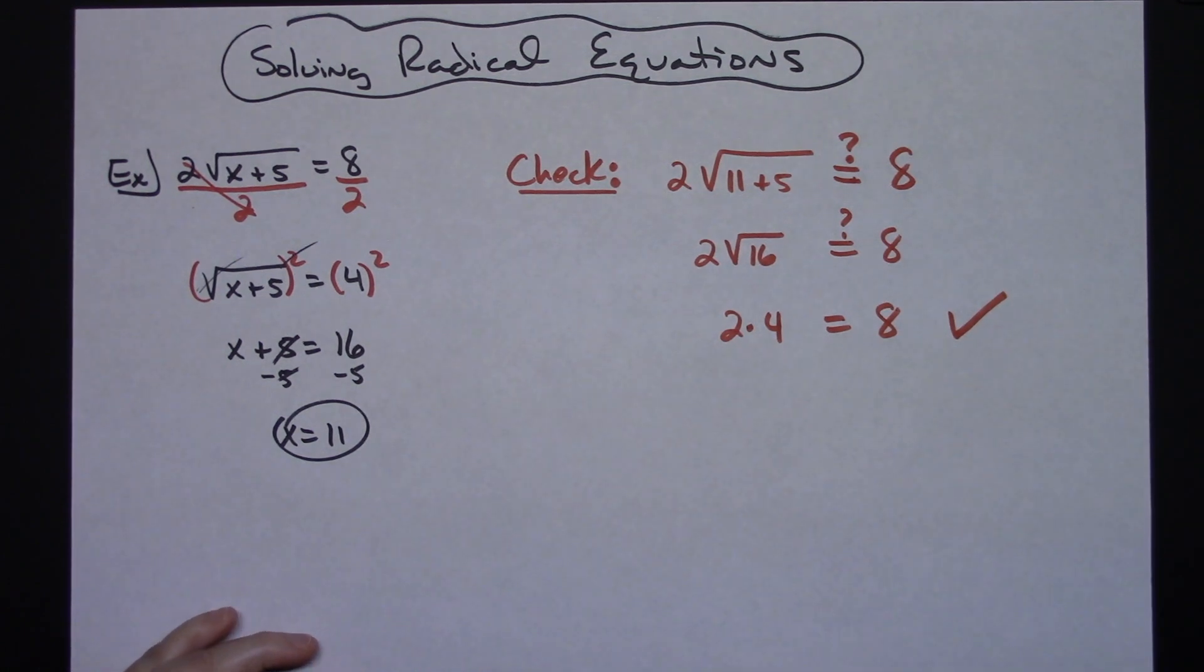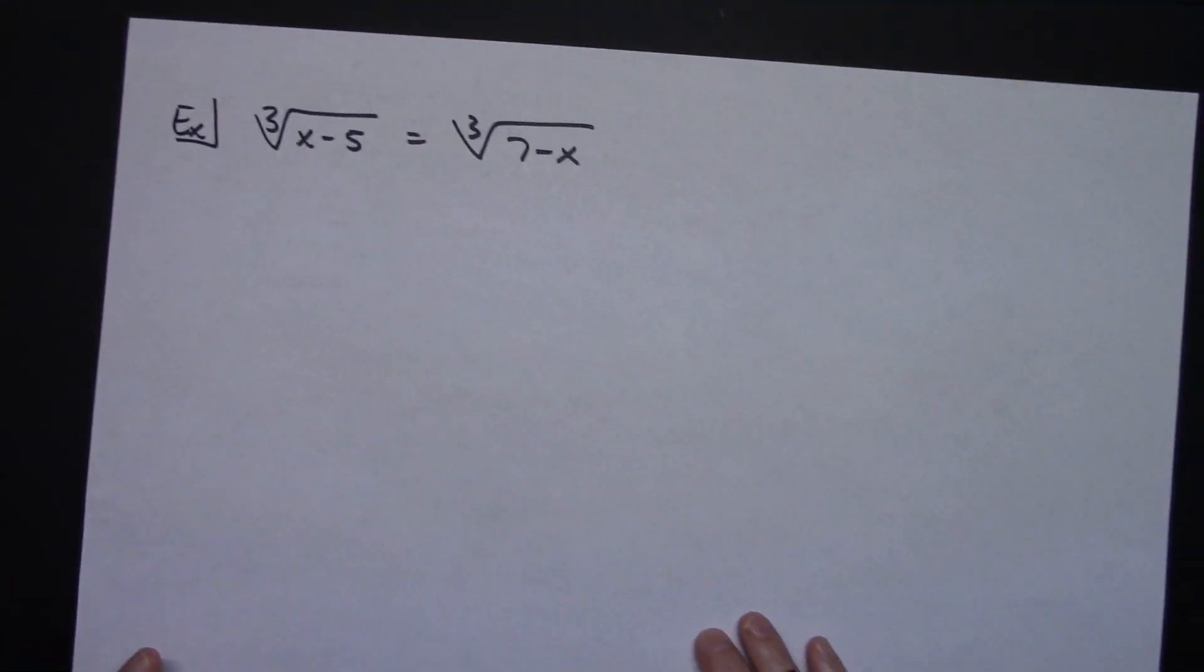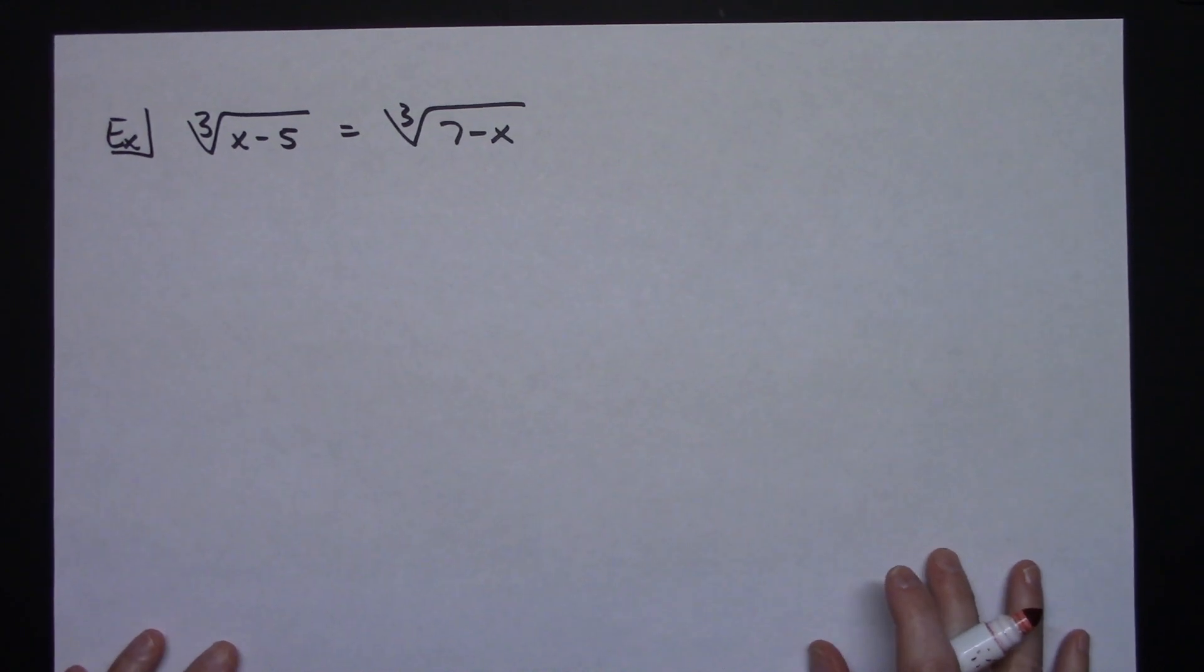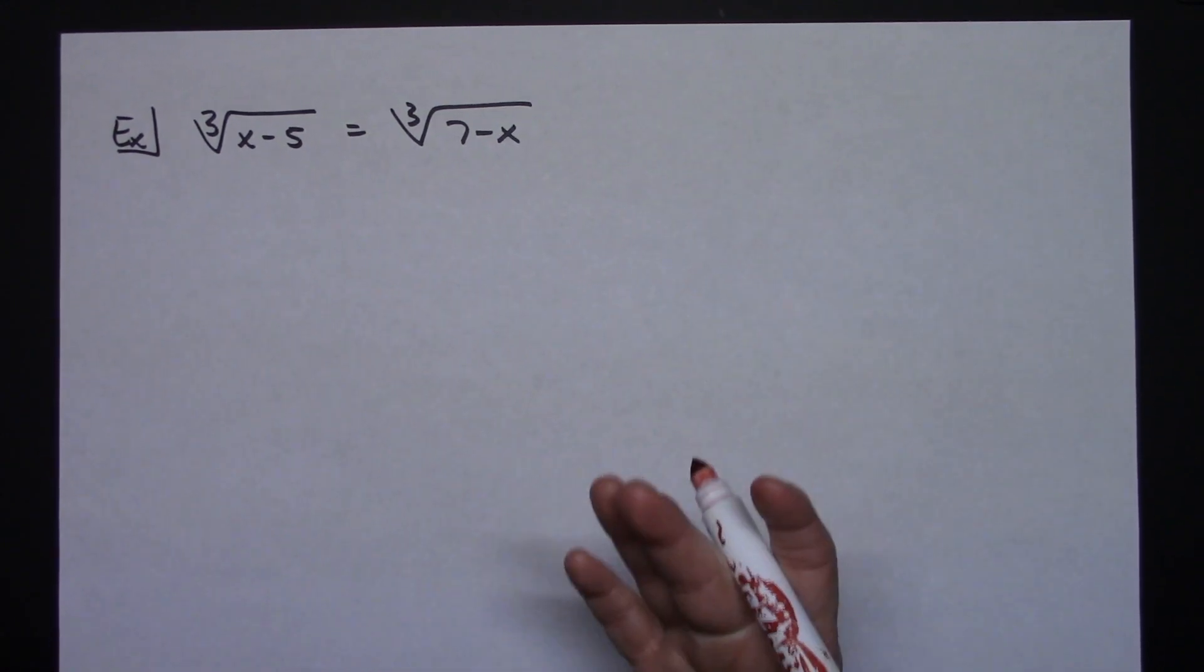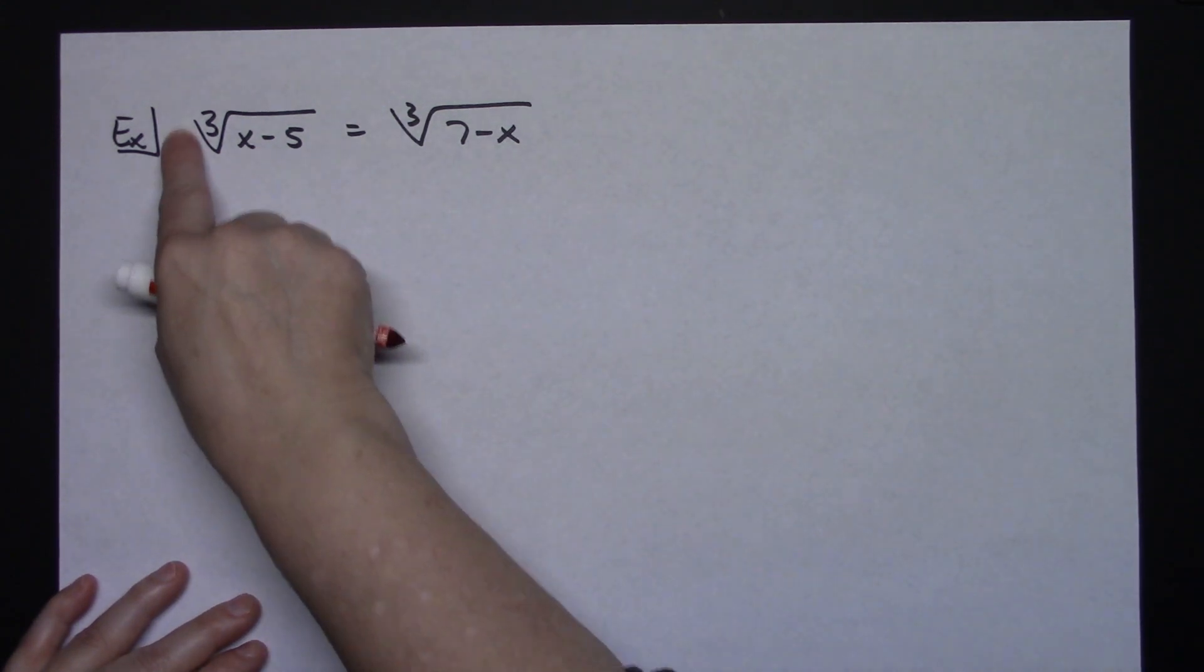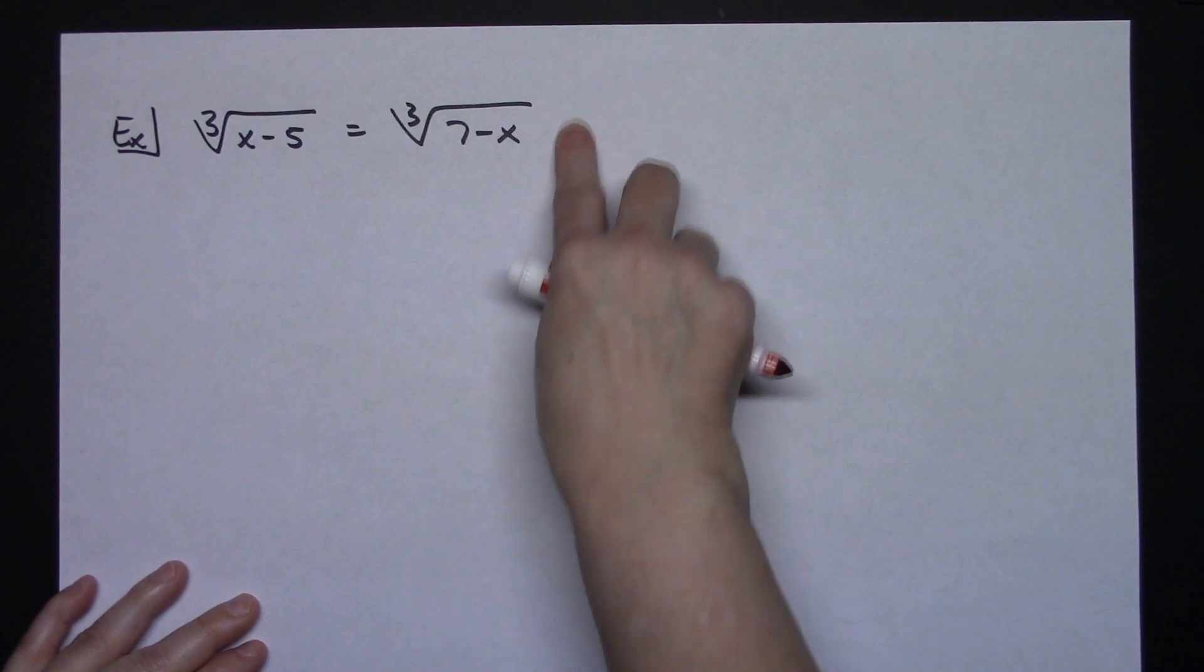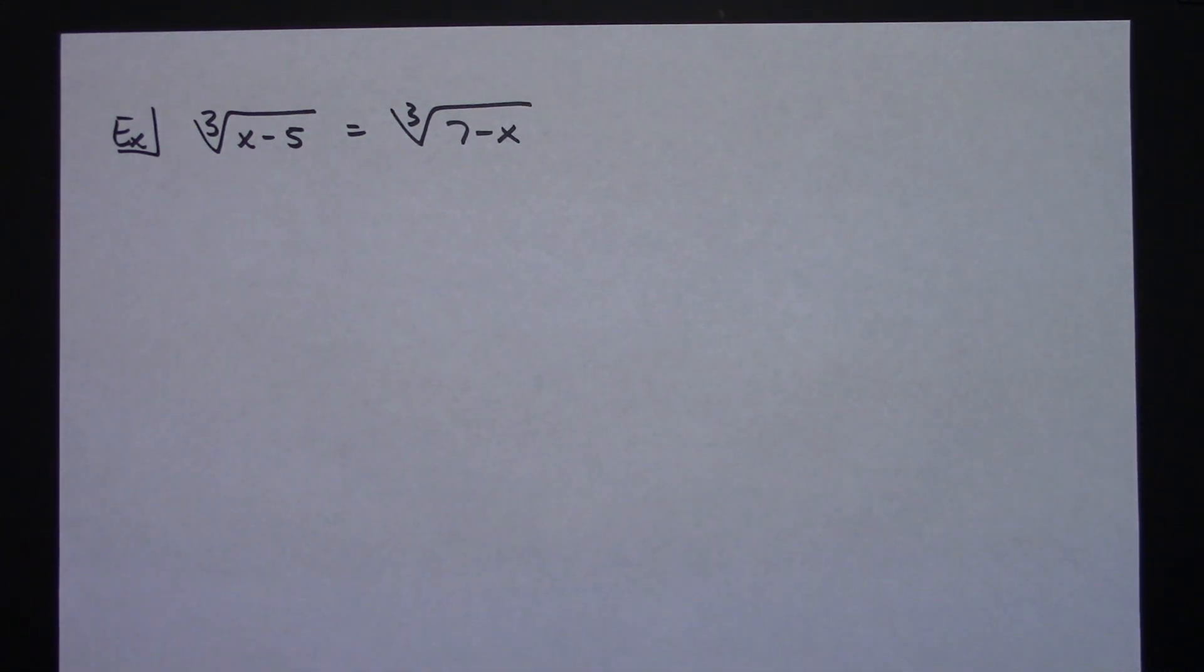So it does check—x equals 11 is the correct answer for this one. Now we're going to do a second example. This time we're going to take a look at some cube roots. On this particular one we happen to have a cube root on both sides, and there's nothing in front or to the right of either of these radicals, so they are already isolated. Since they are already isolated, I can immediately start to do...